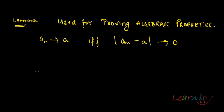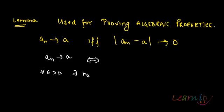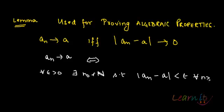We will be using this important lemma for proving all the algebraic properties. The lemma says that a_n tends to a if and only if |a_n - a| tends to 0. Why are we saying so? Essentially when we are talking about a_n tending to a, what we mean is that for all epsilon greater than 0 there exists an n naught belonging to the natural numbers such that |a_n - a| is less than epsilon for all n greater than or equal to n naught. That's the definition.